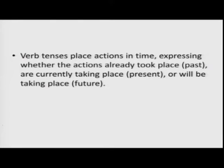To begin with, tenses express whether actions already took place in the past tense, are currently taking place in the present, or will be taking place in the future. We make three broad distinctions: past, present, and future. In English, verbs have past tense forms and present tense forms. For example, if you take the verb 'write', in past tense it becomes 'wrote' and in present it is 'write'.